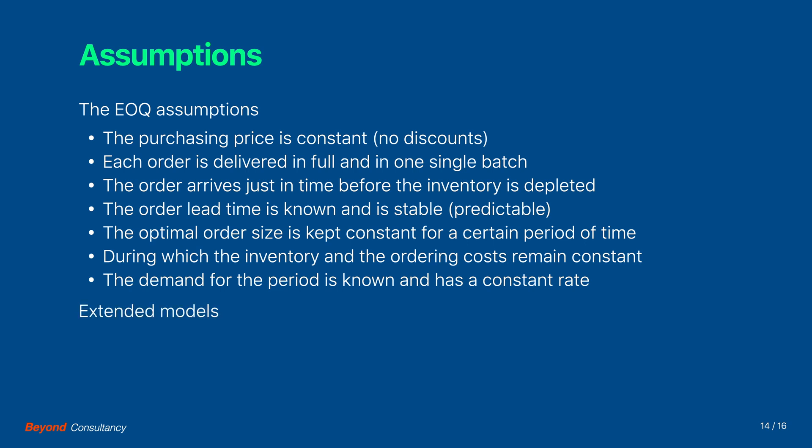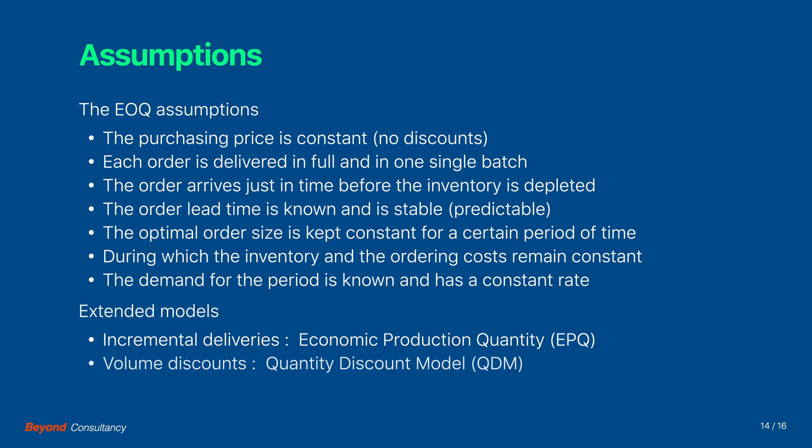In case some of these assumptions cannot be met, different optimization models are available. If for instance we have incremental deliveries instead of in one single batch, then the economic production quantity model determines the optimal order size. If we have price discounts with certain order sizes, then the quantity discount model is advised. We will discuss these order size optimization models in other keynotes.